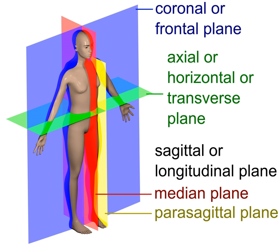The transverse plane or axial plane divides the body into cranial and caudal portions.